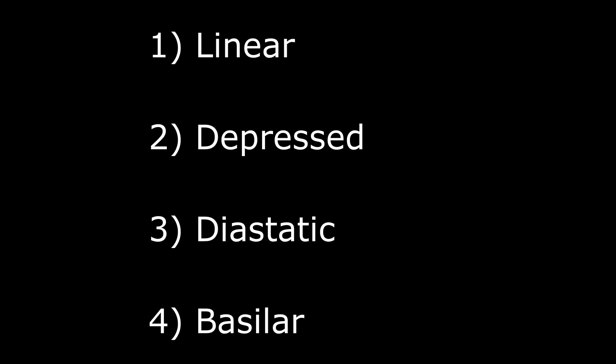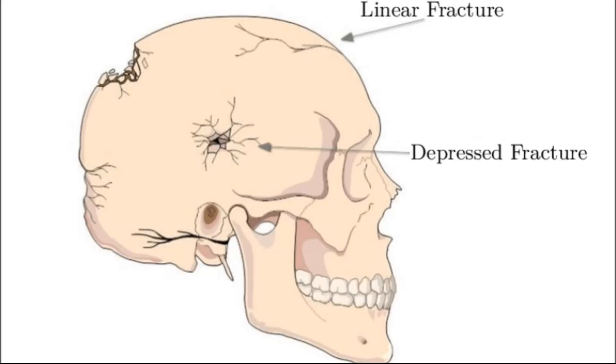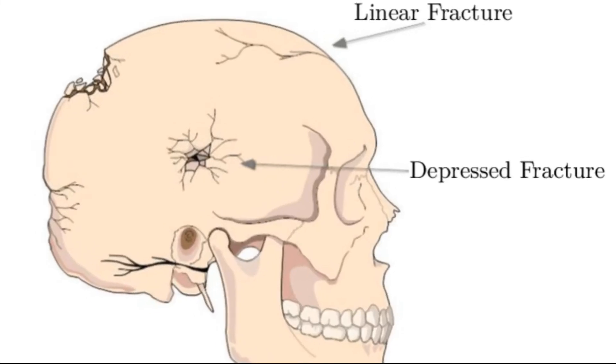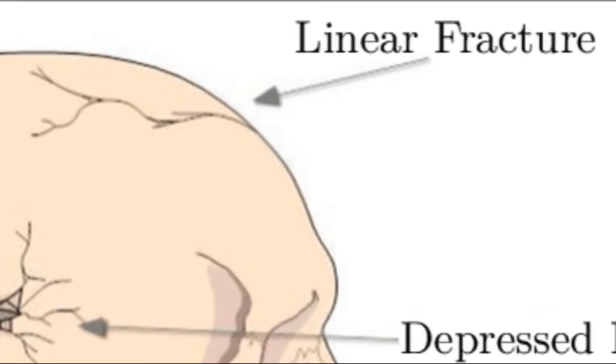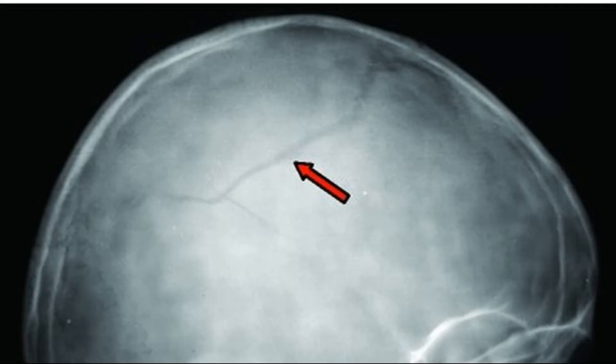Moving on to fractures, you have four different types of skull fractures: linear, depressed, diastatic, and basilar. Starting with linear — it is just a break in the bone, but it is immobile. The bones do not move and hence it doesn't need surgery.